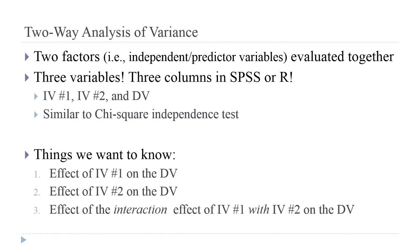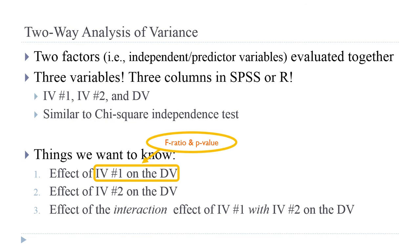So setting up your design, which you'll learn more about in research designs, is really important. Once you've set it up, you can do this analysis. You can evaluate the effect of the first independent variable on the dependent variable with an F-ratio and a P-value, just like for a regular one-way ANOVA — the ratio of estimated variance between groups to variance within groups.